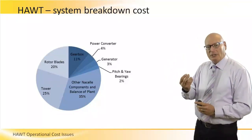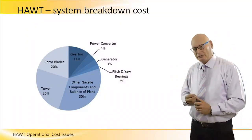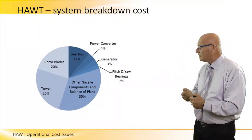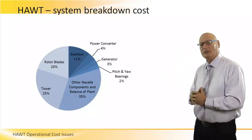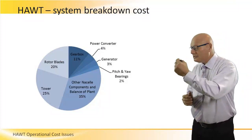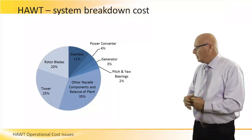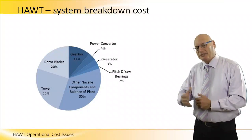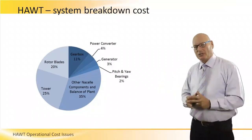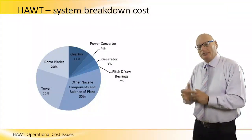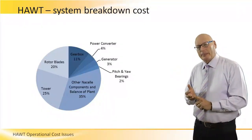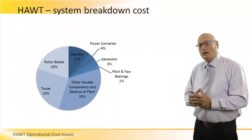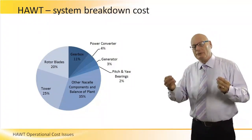Evaluating system breakdown cost by component, rotor blades contribute 20% to breakdown cost. The tower itself contributes 25% — more than the rotor blades. The nacelle components and balance of plant account for 35%, where the more sophisticated systems reside: the generator, brakes, all control systems, the gear and gearbox. So it's 35% compared to 20% for the rotor blades — rotor blades are very reliable devices.